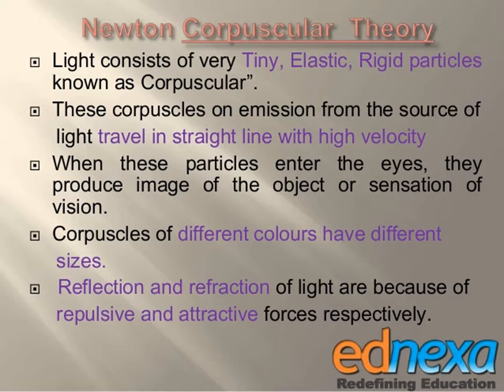According to the corpuscular theory, Newton suggested that light consists of tiny particles known as corpuscles. These corpuscles are emitted from the source of light and travel in straight lines with high speed.